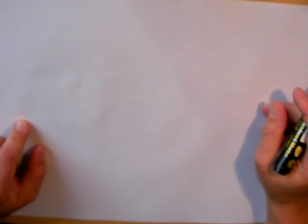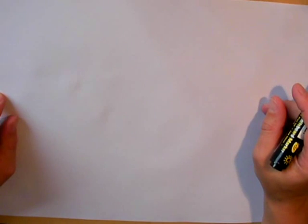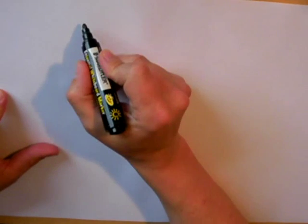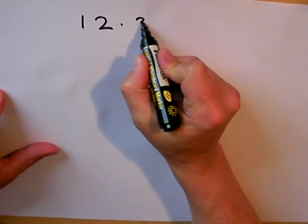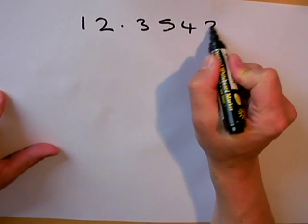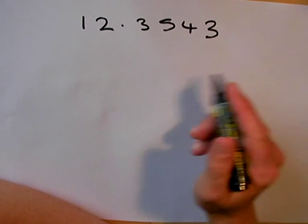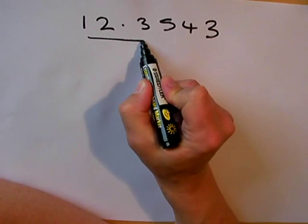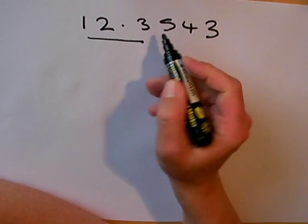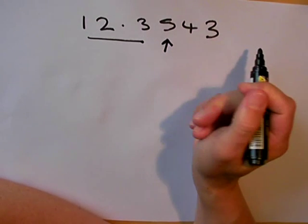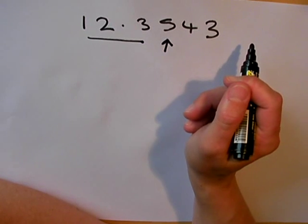I'm now going to round some numbers off to so many decimal places. I'm going to start with the first number, 12.3543. I'm going to round this off to one decimal place, so I put my line underneath. For one decimal place, I need to look at the next digit. In this particular case, the digit is 5.